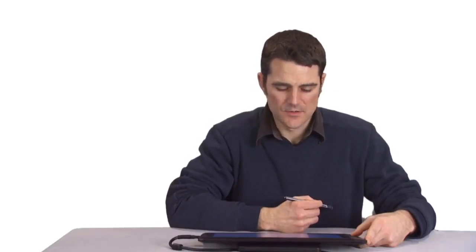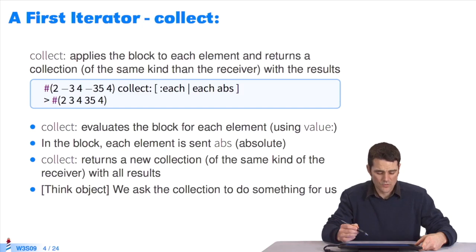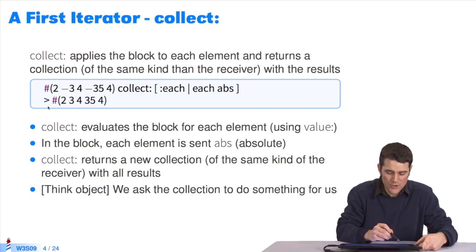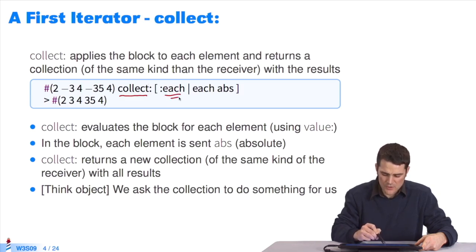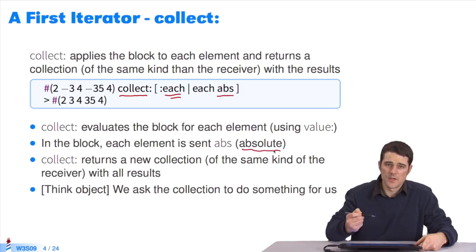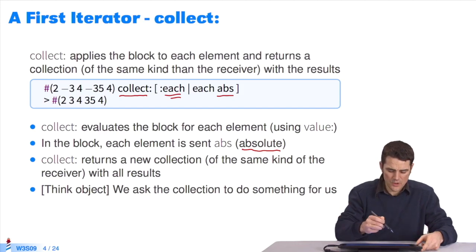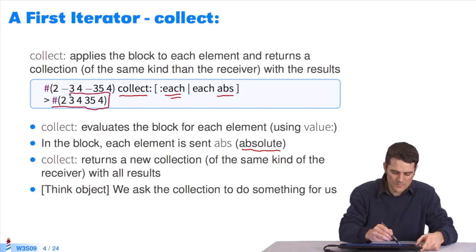There are plenty of iterators. First, there's collect. What's the use of collect when sent to a collection? This is a collection of positive and negative numbers. I send the message collect and I pass a block. Whenever you browse the collection, the parameter of the block will be in turn 2, negative 3, 4, etc. Then you send the message abs for absolute. It means you want the absolute value of this number. Once you've applied the block to every element of the collection, you aggregate the results in a new one. The result returned by collect is a new collection.